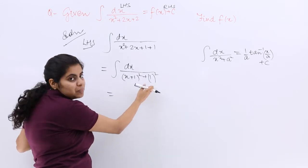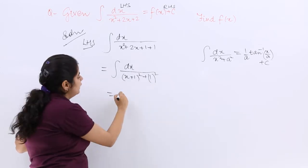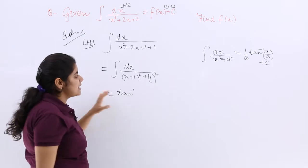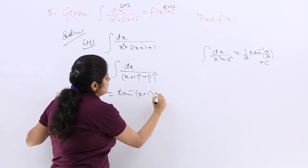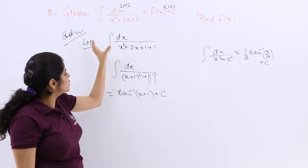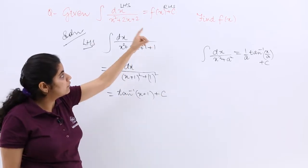It is nothing but 1 by a means 1 by 1. Just remove it. Tan inverse x by a means x plus 1 plus c.